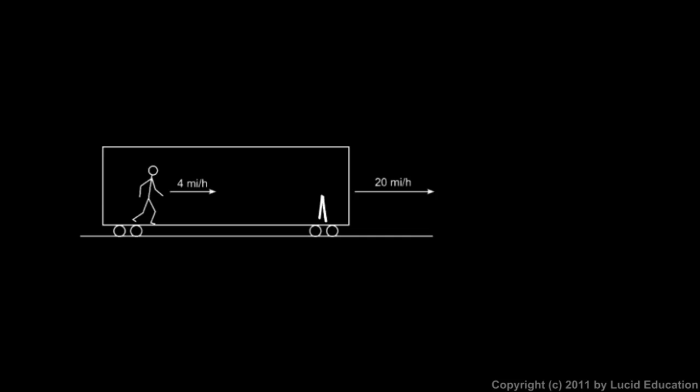So if you're standing here inside the train, for example, watching him, relative to you or from your point of view, he's moving at 4 miles per hour. This gap between the two of you is being closed at a speed of 4 miles per hour. The 20 miles per hour is irrelevant because you and he both are on the train car, and you see him moving relative to the train car or relative to you.